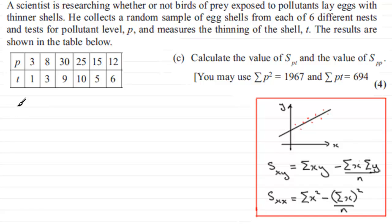So when it comes to working out s_PT, let's just mark this in here: s_PT, then we would have in place of Sigma XY it's going to be Sigma PT, and then we're going to have Sigma P times Sigma T over n. So that's the basic formula.